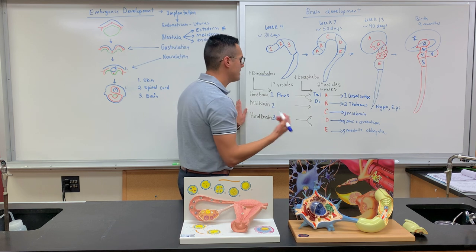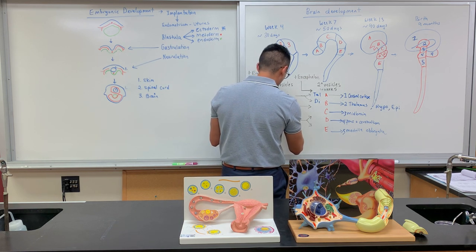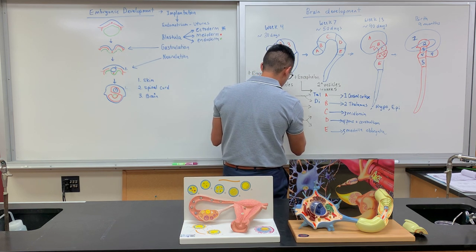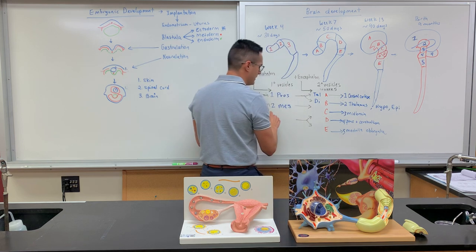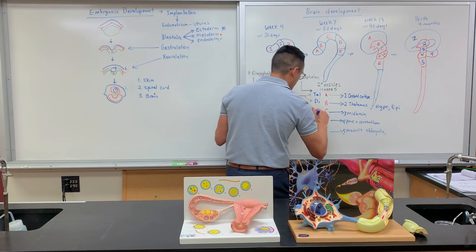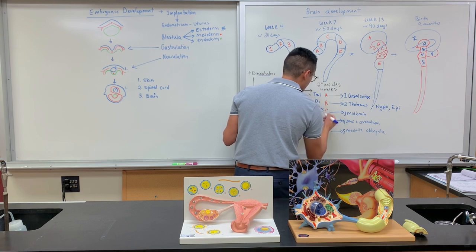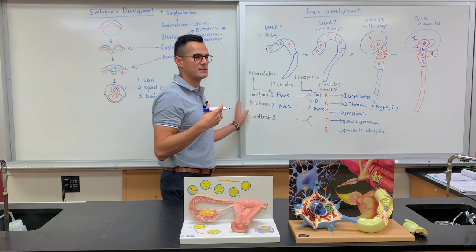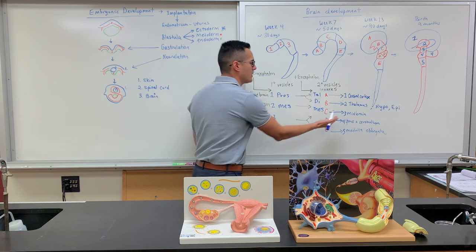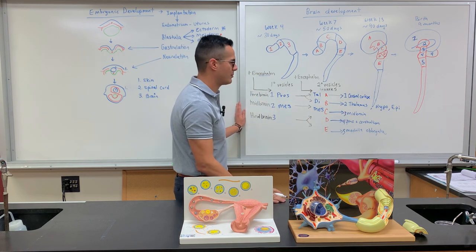The next one is what we know as the mesencephalon. This one is pretty constant — it's just further developing in size. The prefix 'mes' means in the middle, hence the name and development of the midbrain.